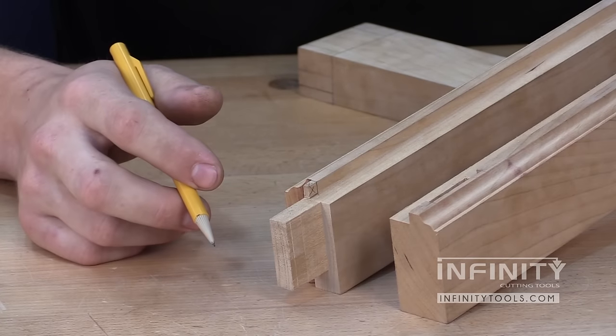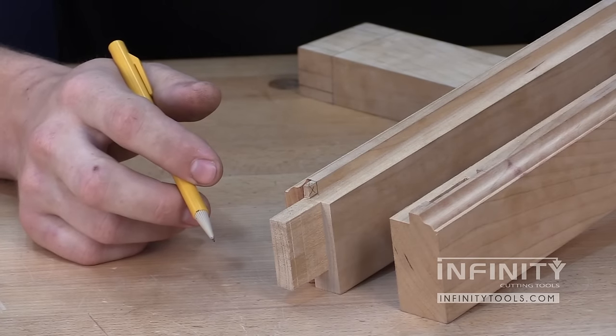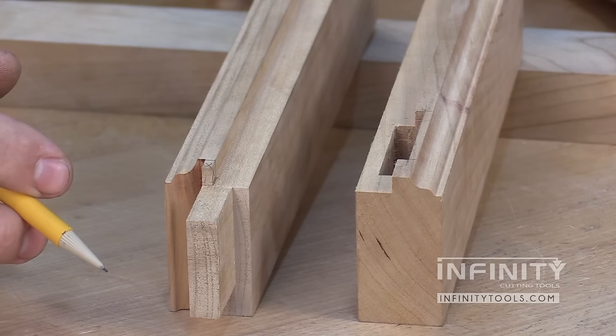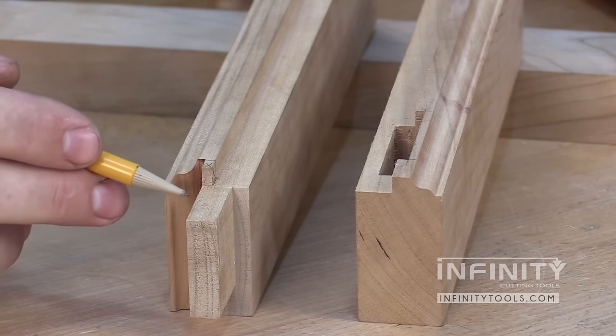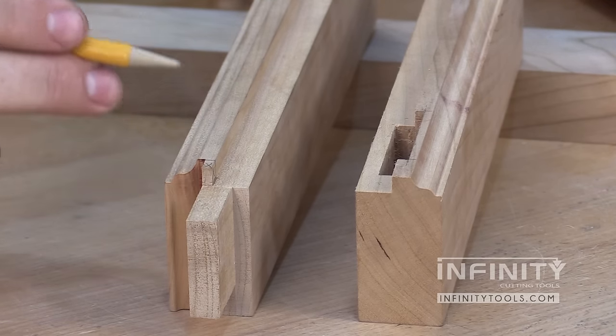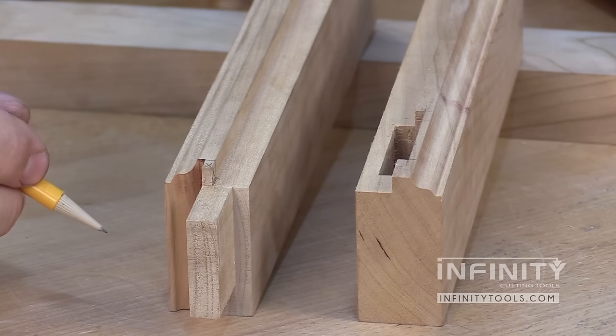With our tenons created at the table saw, we're able to follow the exact same method that we would with the standard Window Sash Set. We can use our tenon to locate our corresponding mortise in our rails and styles.